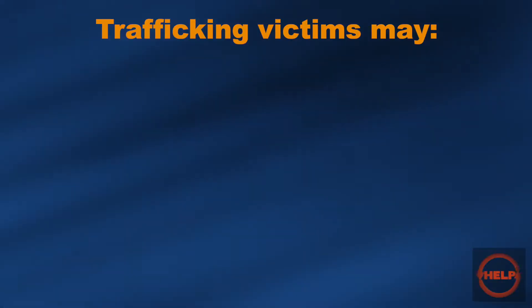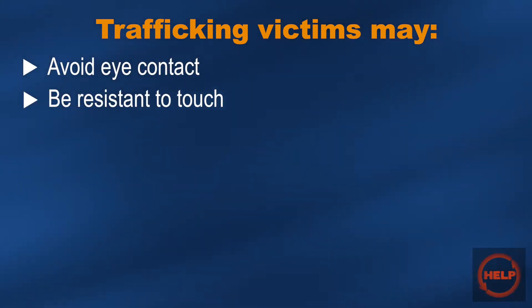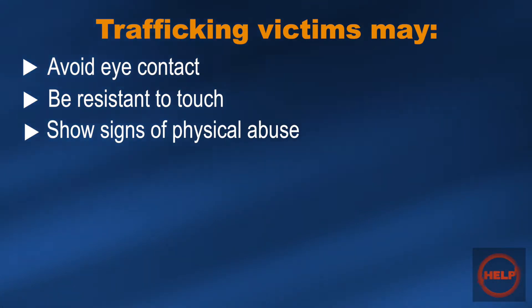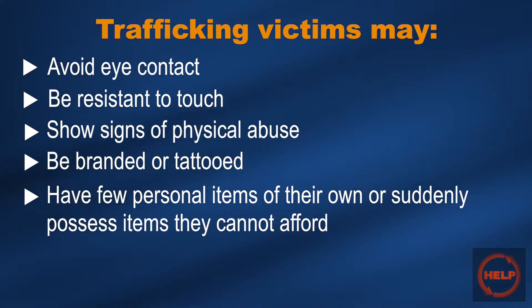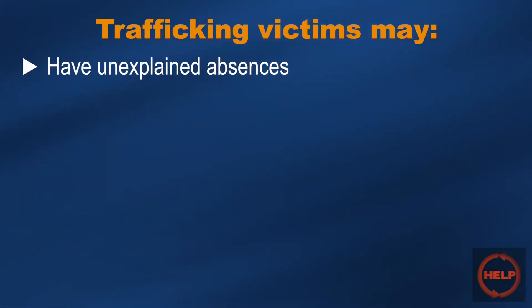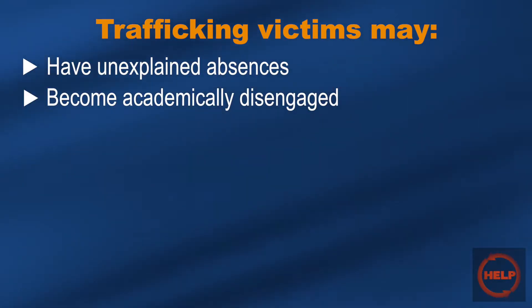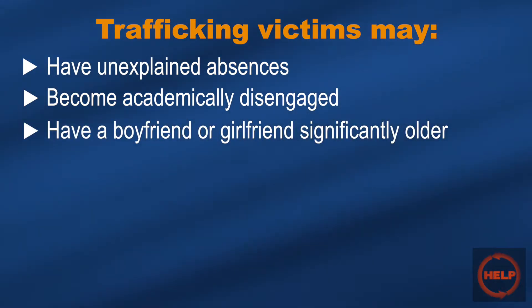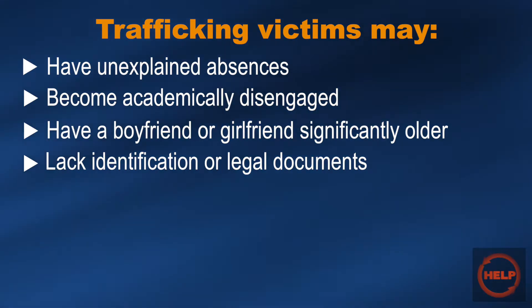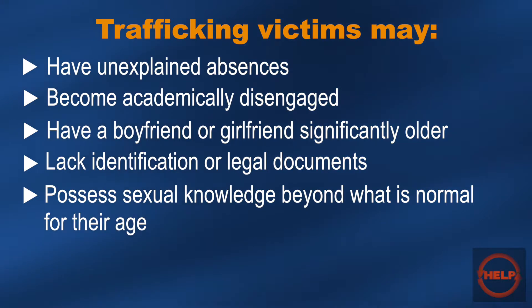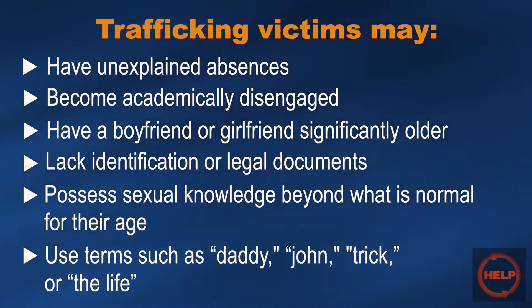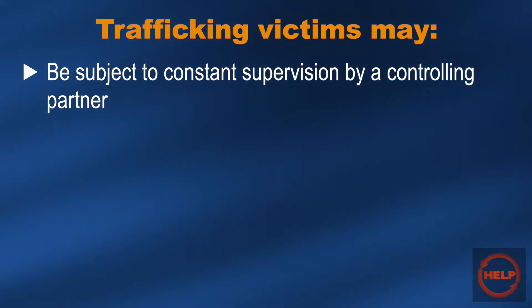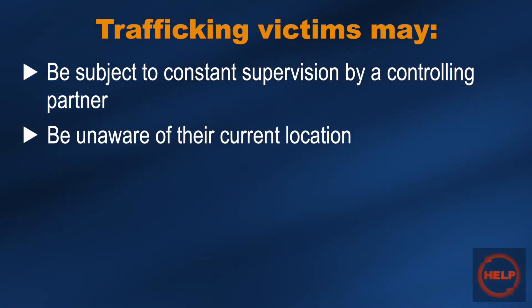Given this information, it is vital to be aware of the numerous warning signs of a trafficking situation in order to identify and report any suspicions. A trafficking victim may avoid eye contact, be resistant to touch, show signs of physical abuse, be branded or tattooed, have few personal items of their own, or suddenly possess items they cannot afford, appear to lack medical care, have unexplained absences, become academically disengaged, have a boyfriend or girlfriend significantly older than them, lack identification or legal documents, possess sexual knowledge beyond what is normal for their age, use terms such as 'daddy,' be subject to constant supervision by a controlling partner, or be unaware of their current location.